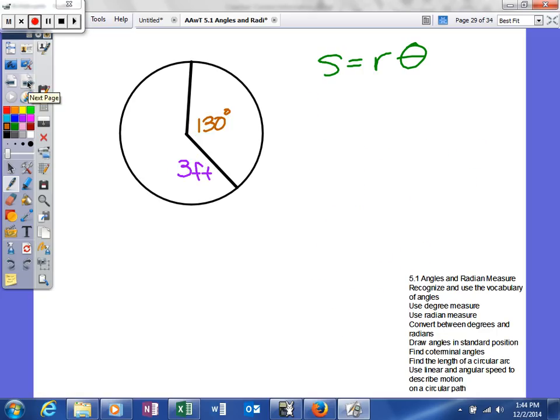Over in the next problem, this one's a little bit different. This time we're given our angle as 130 degrees, and we're given our radius as 3 feet. So what we can do is we can convert our angle first. So again, because I'm given my angle in degrees, I want to convert it into radians, because that's what we have to do in our formula.